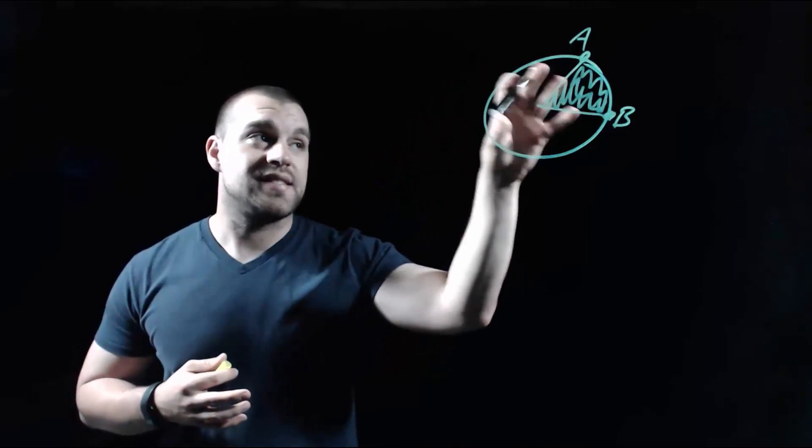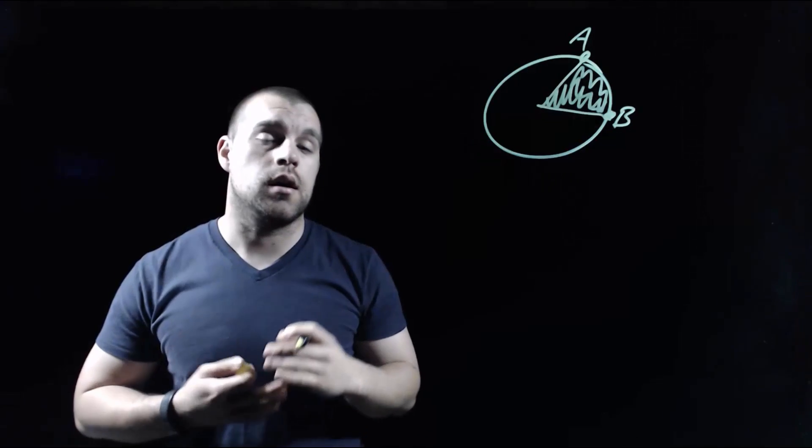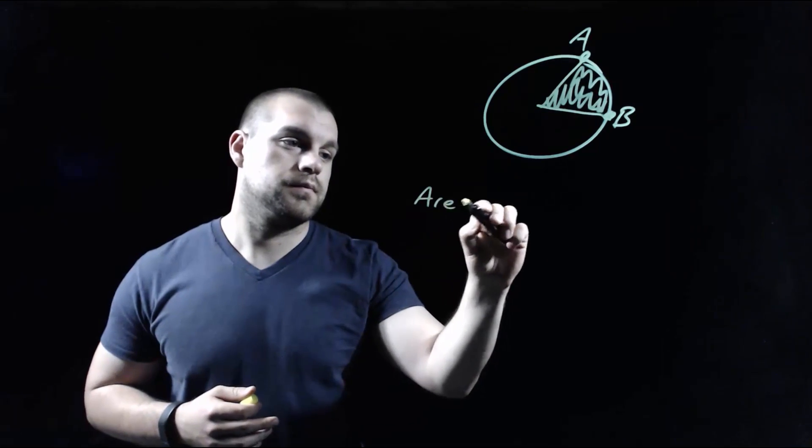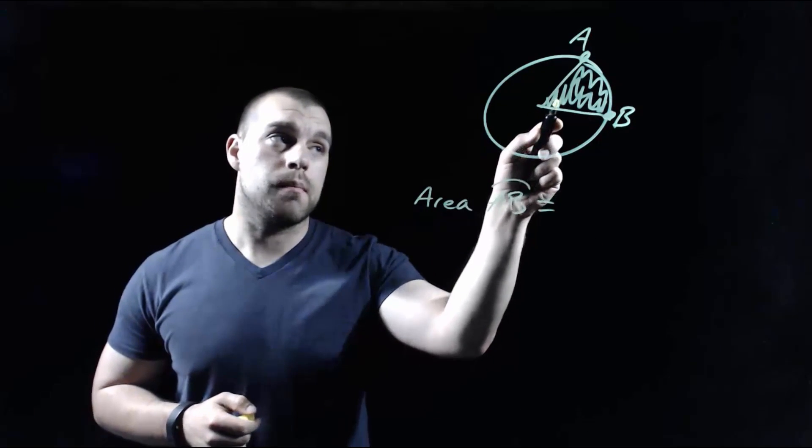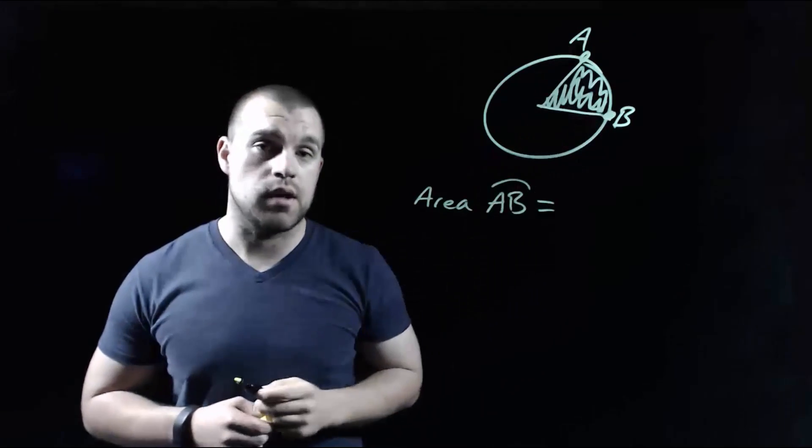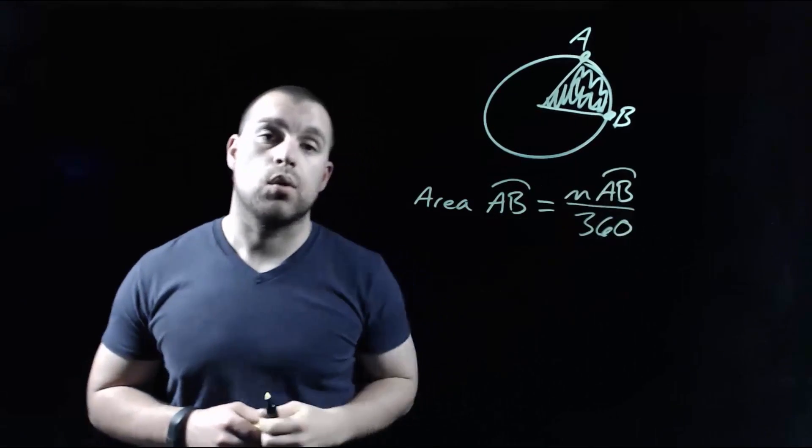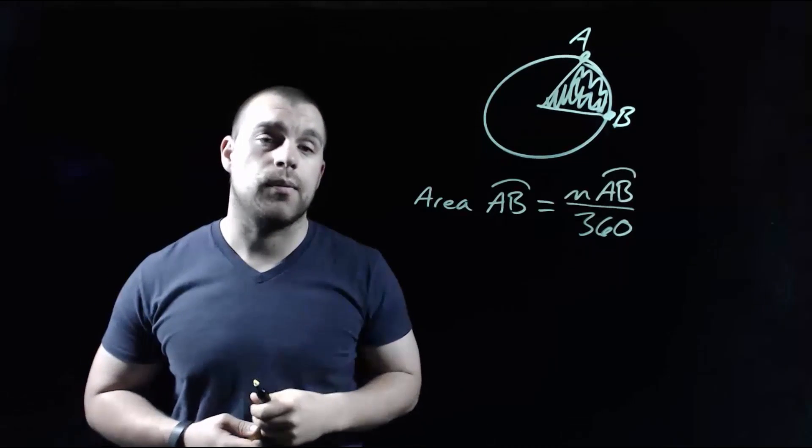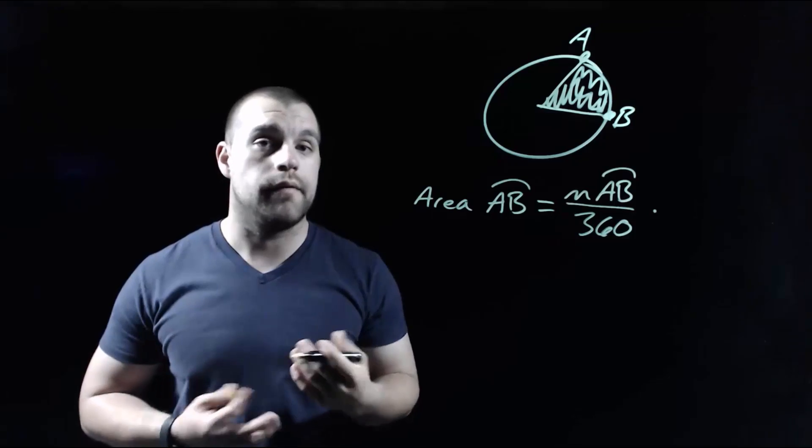So we've got that sector that's bounded by the arc AB, and let's say we wanted to find the area of that sector. In order to find the area of this sector, we need to know the measure of the arc itself that runs from A to B. We're going to take the measure of that arc divided by 360 and then multiply that answer by the area of the total circle.